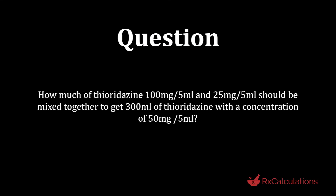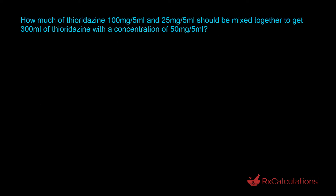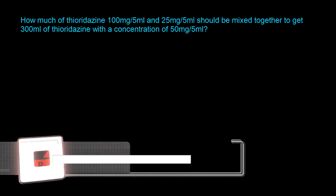The question says: how much of thioridazine 100 milligrams per 5 milliliters and 25 milligrams per 5 milliliters should be mixed together to get 300 milliliters of thioridazine with a concentration of 50 milligrams per 5 milliliters? The request was to use the alligation method, but I'm also going to show you how to solve the same question using the algebraic method.